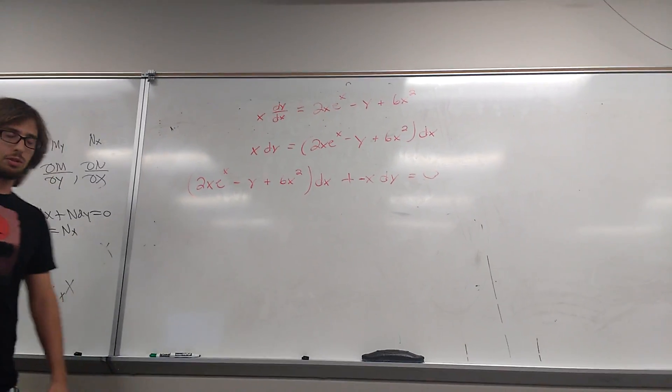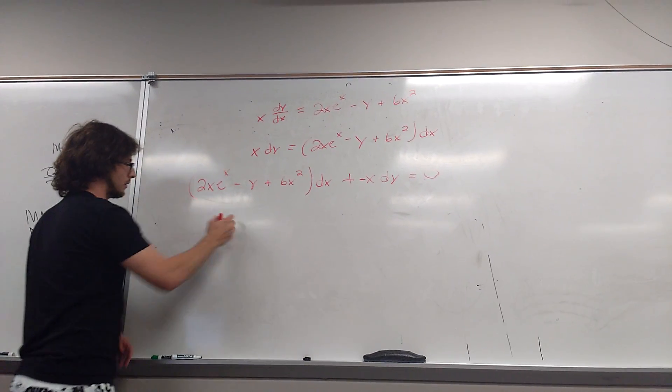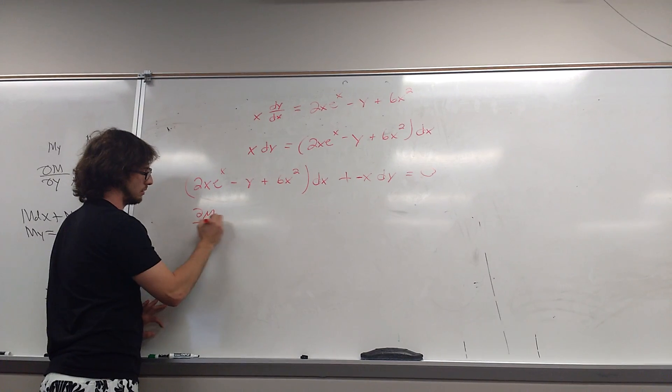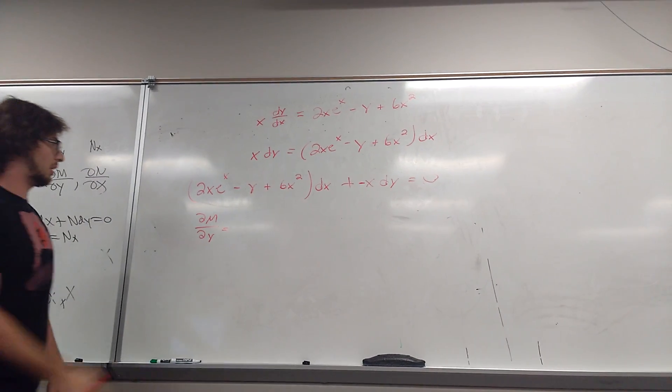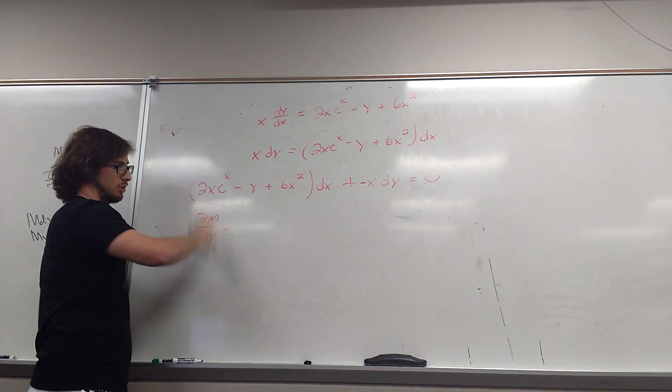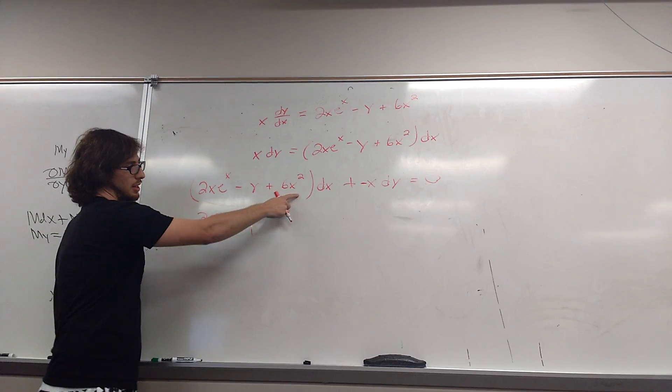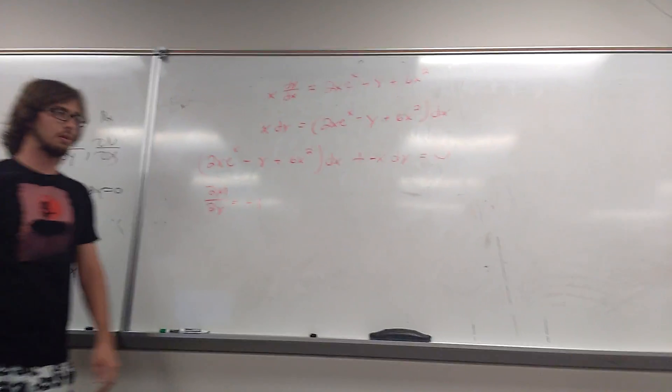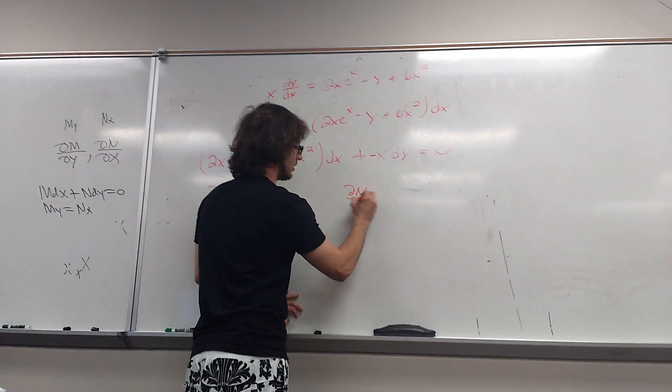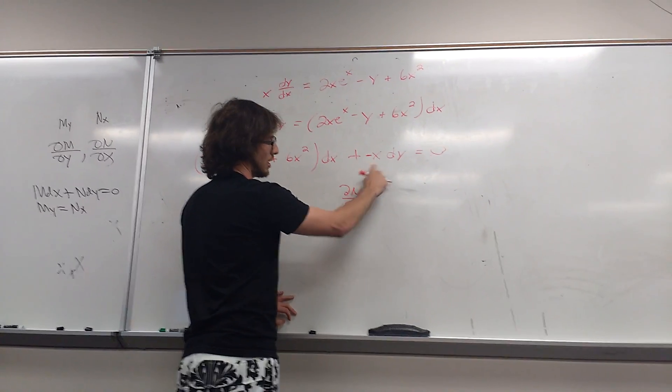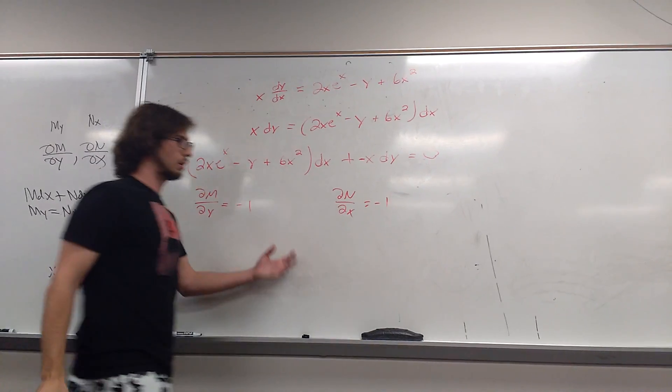So again, we have to check to make sure it actually is exact. So we call this first piece m. So we compute del m del y. And when we do that, we just get, well, that's all a function of x. That's just zero. And here we have a negative y, so we get a negative 1. And then that's solely a function of x, so zero. And then over here we do del n del x, where that's just n. And that's a negative x, so we just get our negative 1. So it's exact.